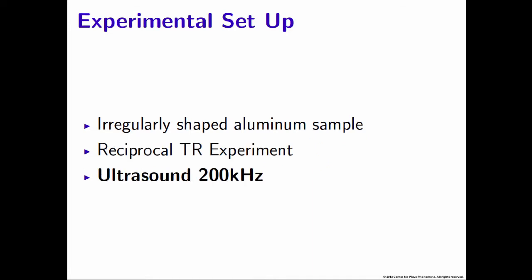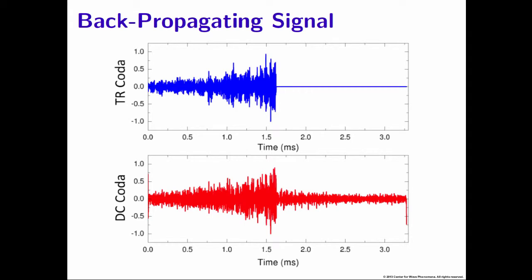This was an ultrasound experiment with a source impulse frequency of 200 kilohertz. We would emit our source impulse through the irregularly shaped aluminum sample, record it, and then apply both methods to get the calculated backpropagating signals. On the top panel in blue is our time reversal backpropagating signal; on the bottom is our deconvolved signal.